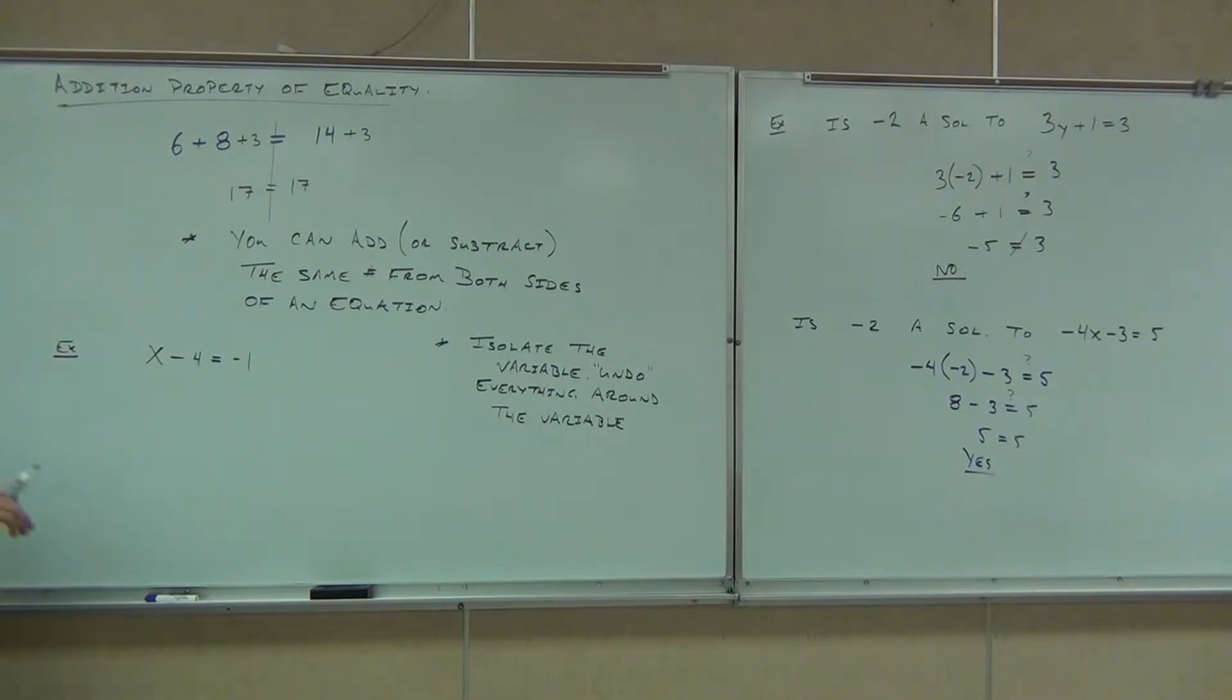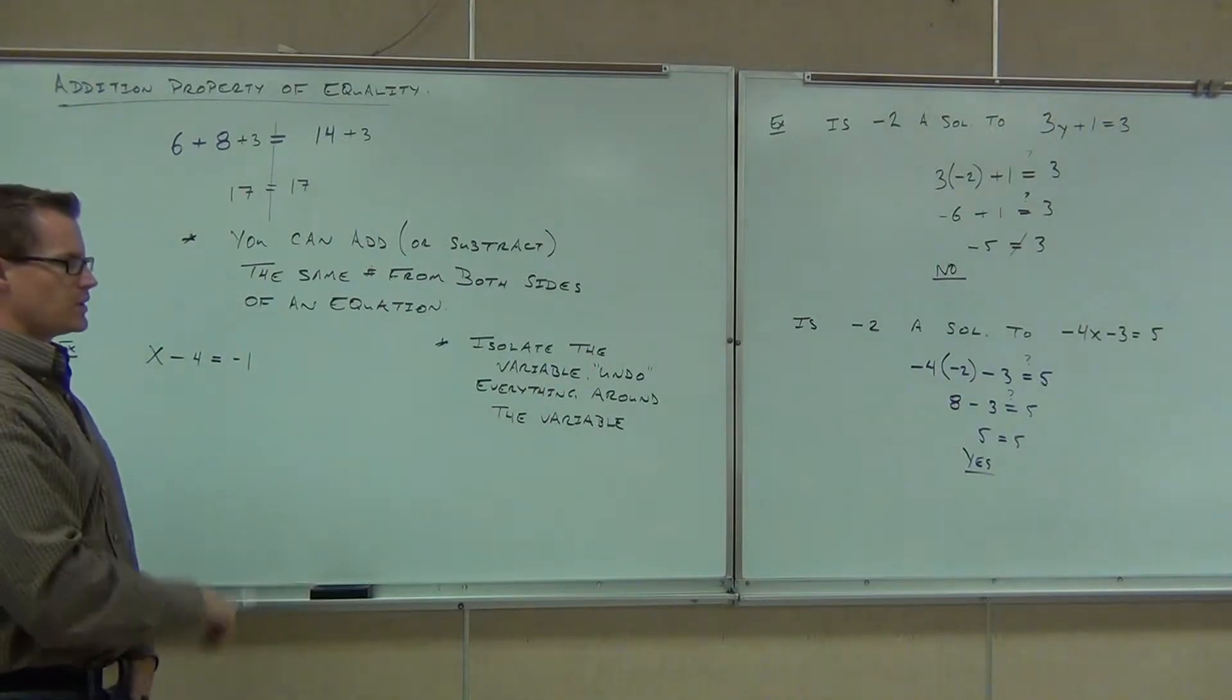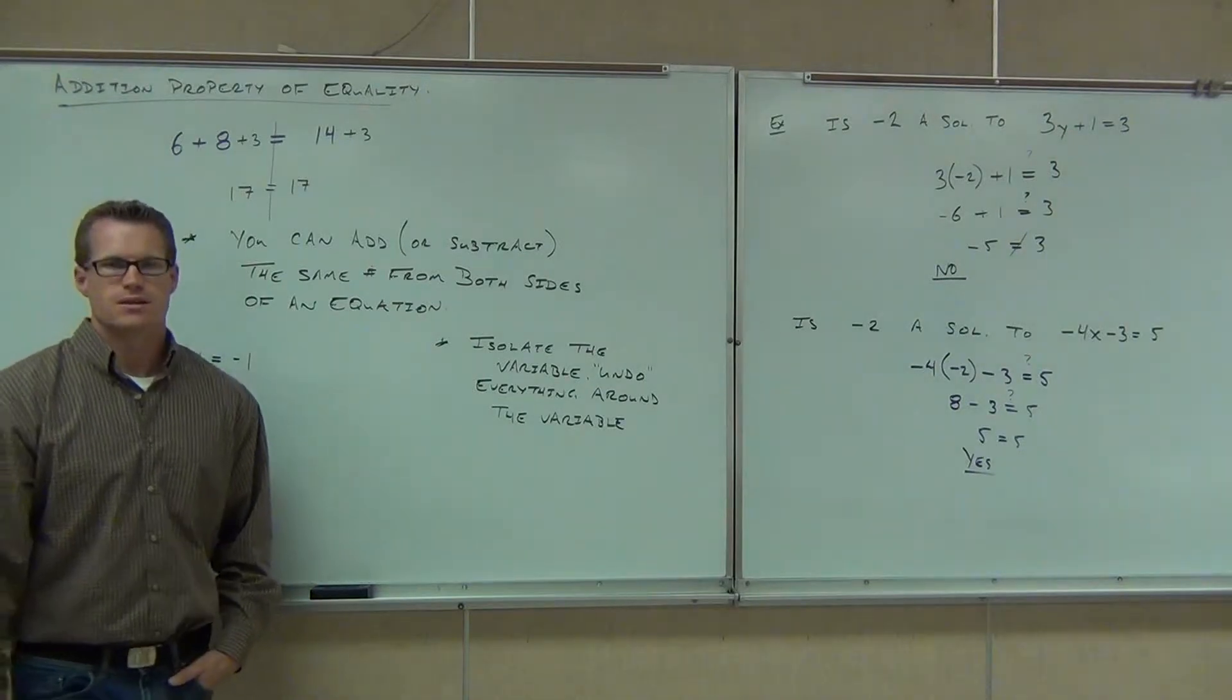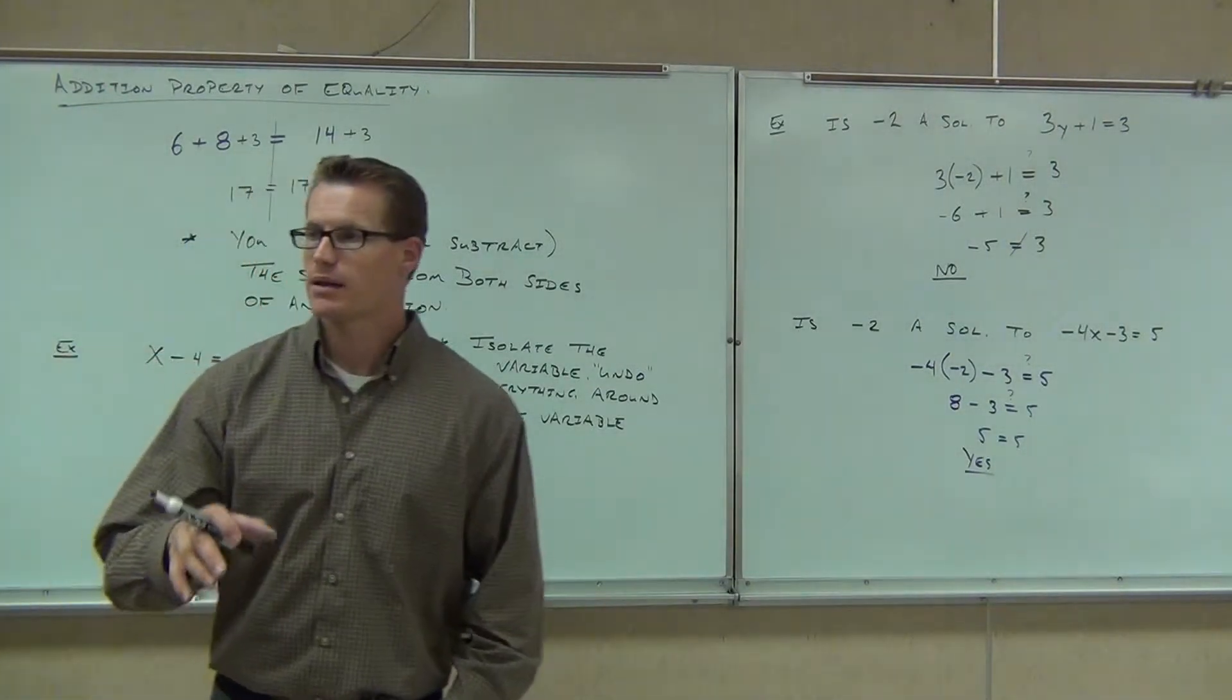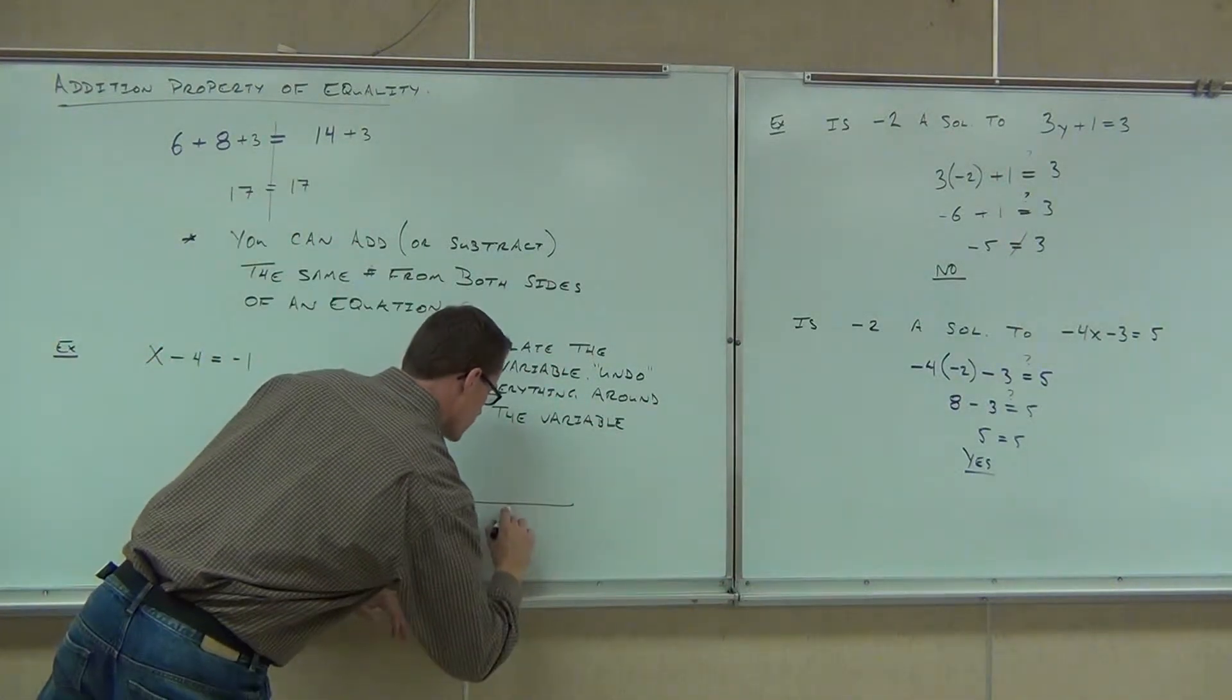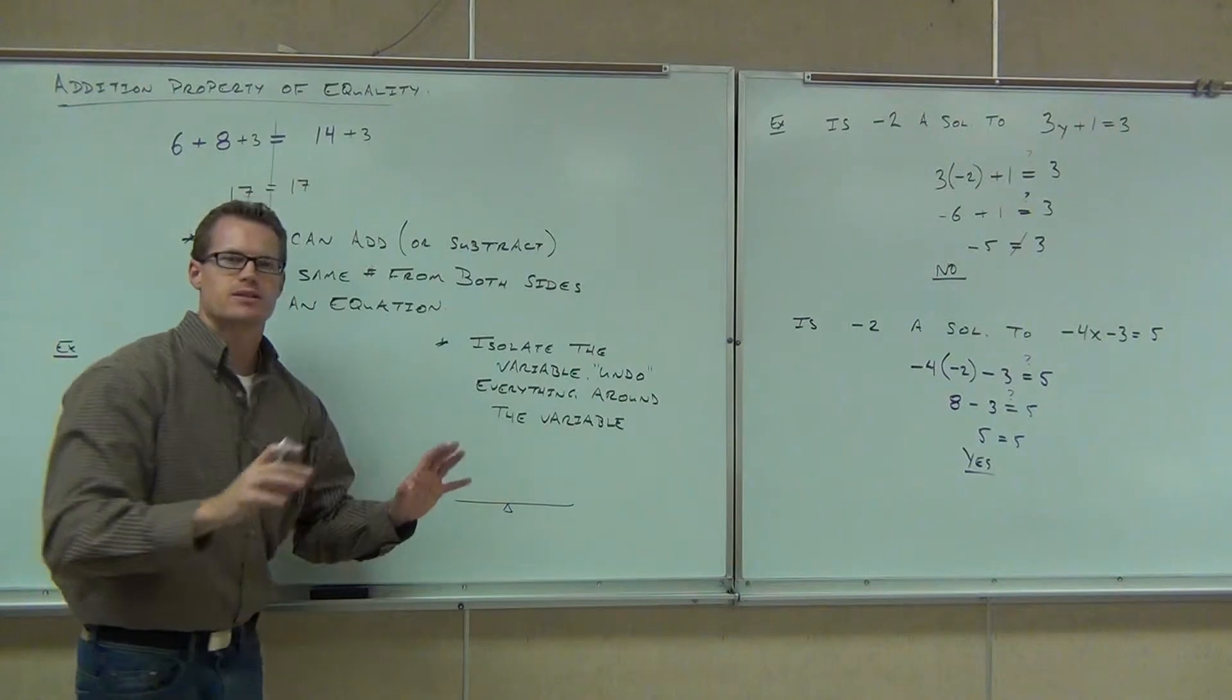We're going to isolate the variable. That means we're going to undo everything around it. Okay, let's look back at our equation. What we need to know is that the equation comes automatically balanced. Just like your balance beam that I erased over here. Just like this thing. It comes balanced initially.